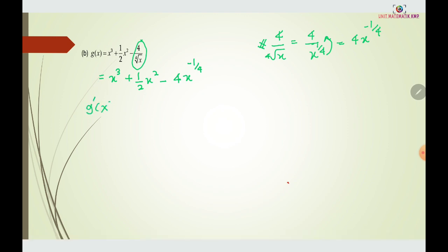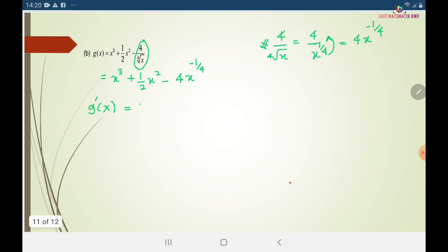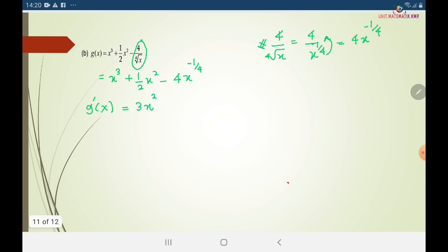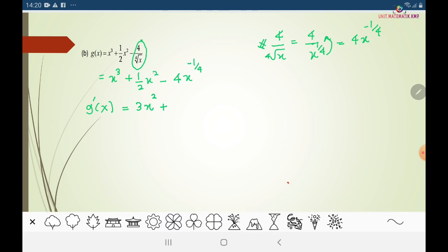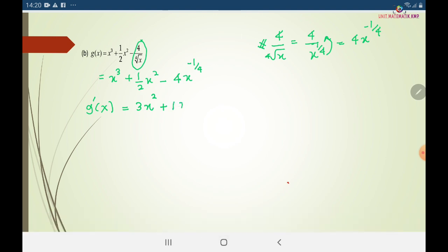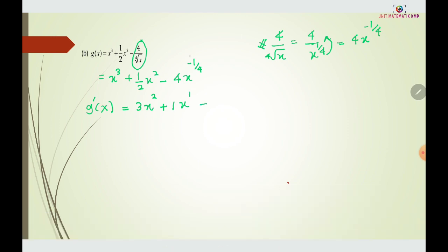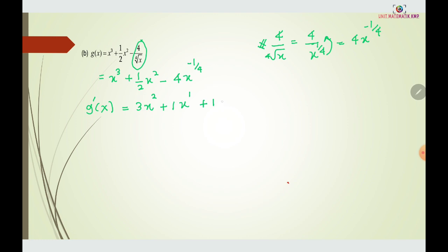Now we differentiate to get g'(x). Differentiating 3x³ gives 3x². For (1/2)x², multiplying 1/2 by 2 gives 1, so the term becomes x^1, which is just x. Then for -4x^(-1/4), we multiply: -4 times (-1/4) gives 1, and the power becomes (-1/4 minus 1).